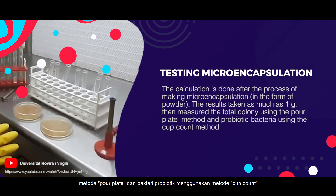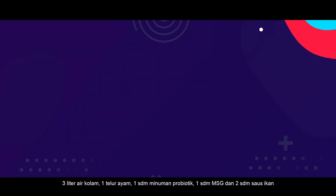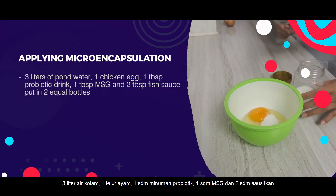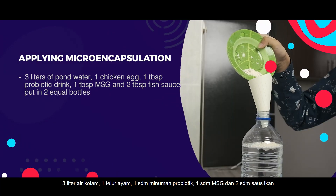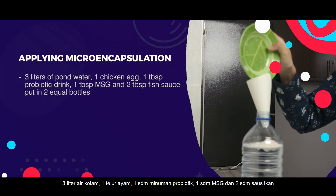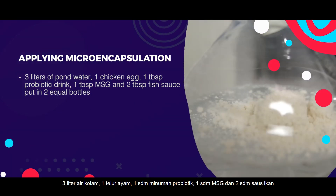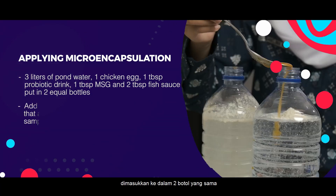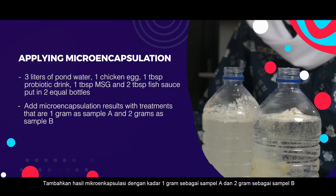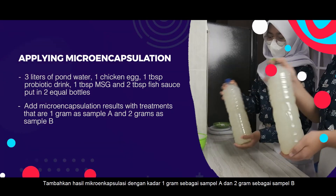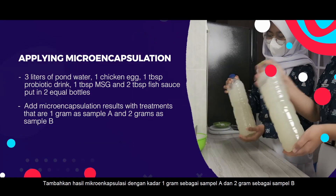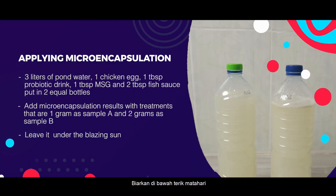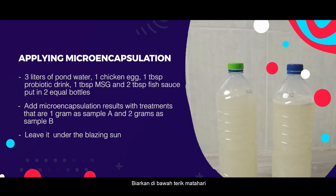The total colony is measured using the pour plate method and probiotic bacteria using the cup count method. For the application test: three liters of pond water, one chicken egg, one tablespoon probiotic drink, one tablespoon MSG, and two tablespoons fish sauce are put in two equal bottles. Microencapsulation results are added with one gram as sample A and two grams as sample B, then left under the blazing sun.